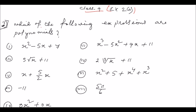The question is: which of the following expressions are Polynomials? Question number one: x squared minus 5x plus 7.